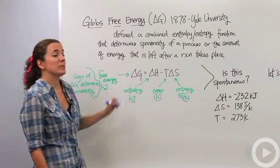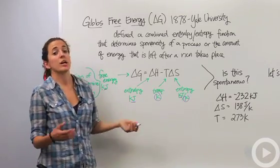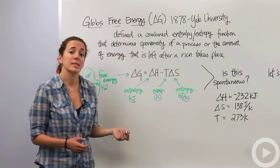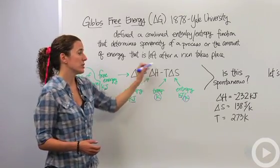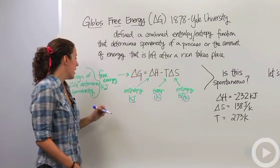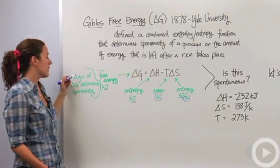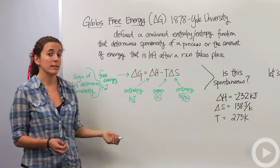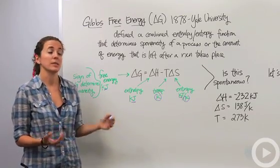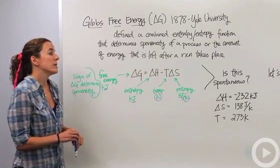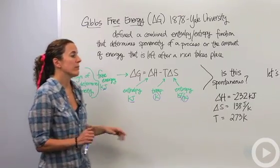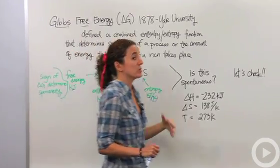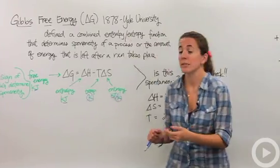Delta G is what actually determines if something is spontaneous or not — it's a combination of all these things. The sign of delta G is going to tell us if the reaction is spontaneous.